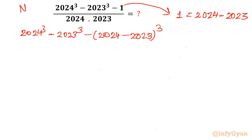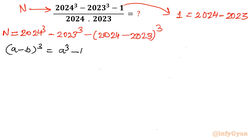I am writing only the numerator; at last we will take up the denominator also. Now we know one identity: (a − b)³ = a³ − b³ − 3a²b + 3ab².